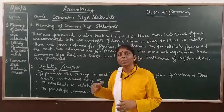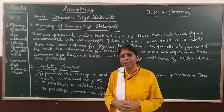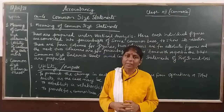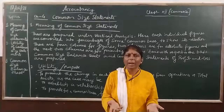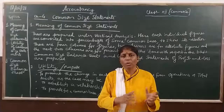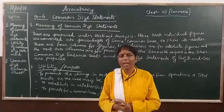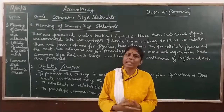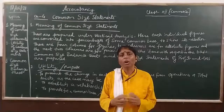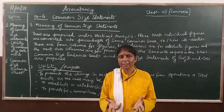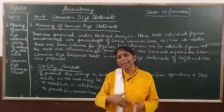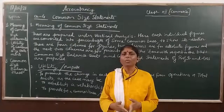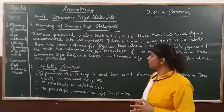According to that basis, all other items are expressed as percentages. When we talk about the balance sheet, the basis is total assets or total liabilities. Since total assets and total liabilities are always the same, you can choose either one as the common basis at 100%, and then express all items relative to that.